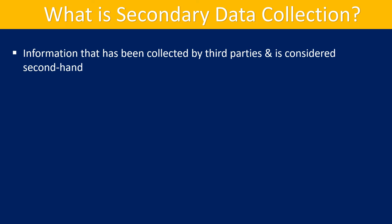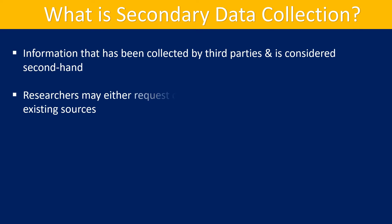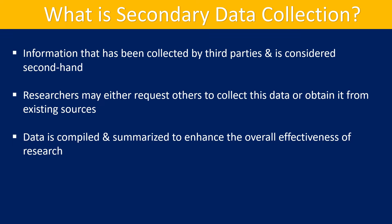In simple terms, secondary data is information that has been collected by third parties and is considered second-hand. Researchers may either request others to collect this data or obtain it from existing sources. This data is usually compiled and summarized to enhance the overall effectiveness of research.